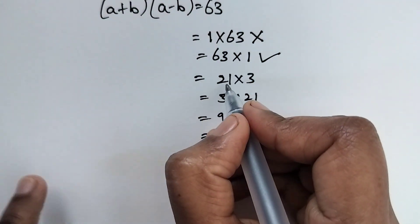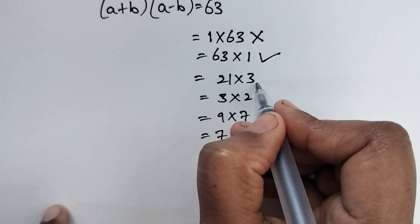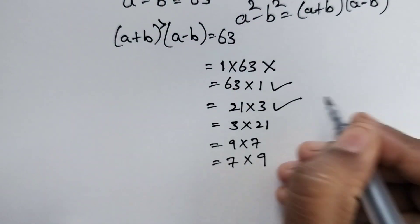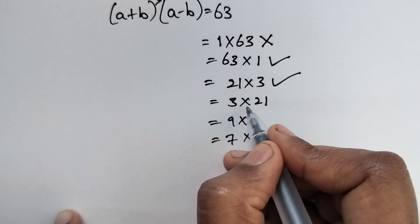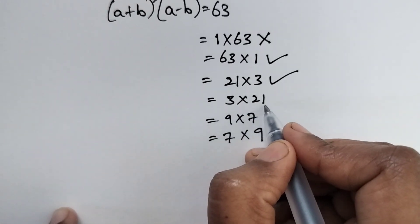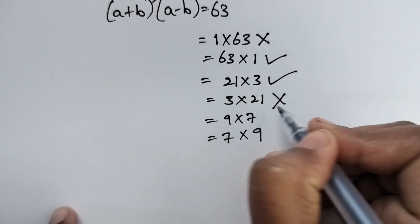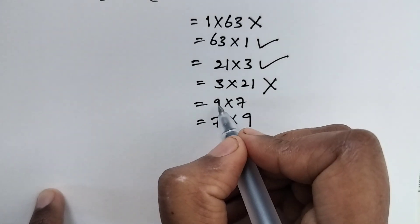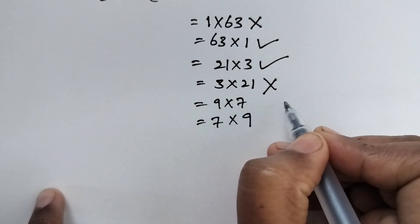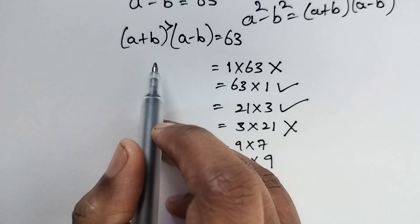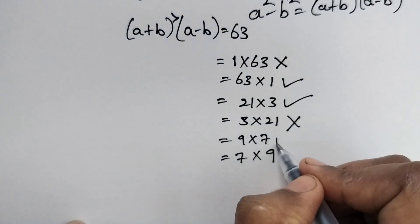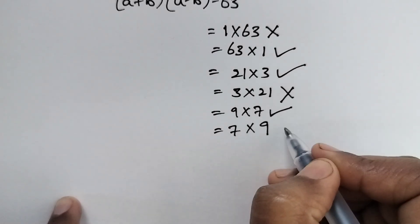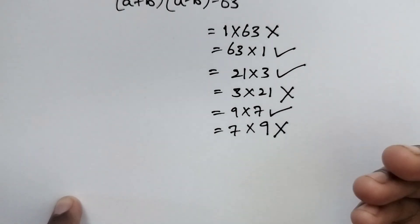For 21 times 3: 21 is greater than 3, so this is also satisfied. For 3 times 21: 3 is less than 21, so this is not satisfied. For 9 times 7: 9 is greater than 7, so this is satisfied. For 7 times 9: 7 is less than 9, so this is not satisfied.